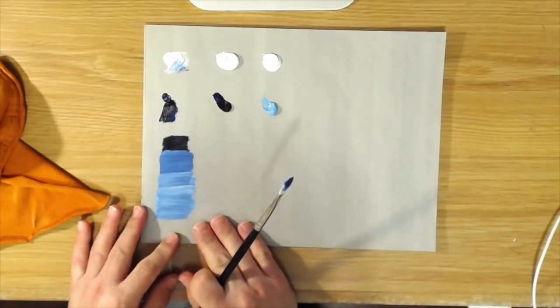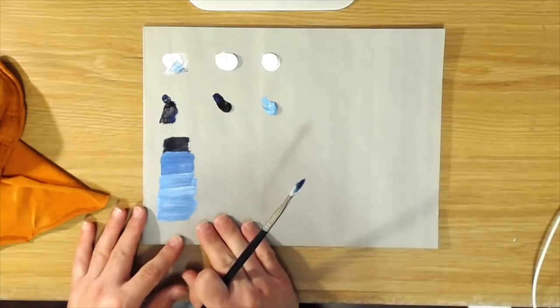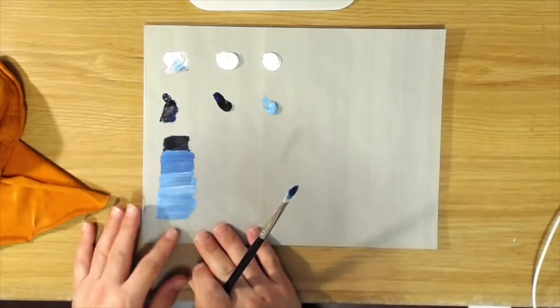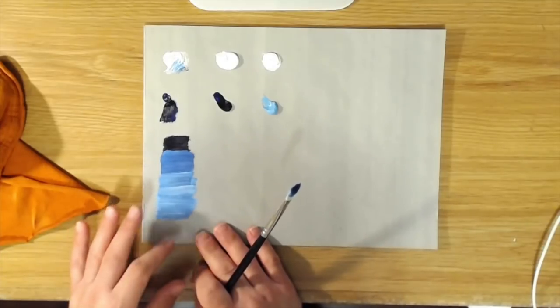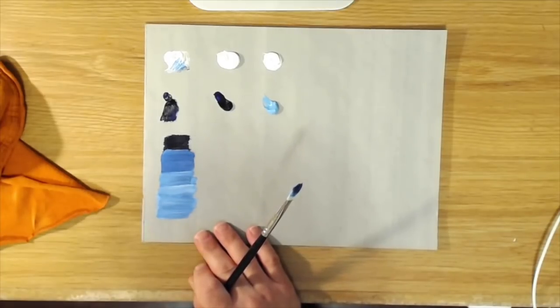And it was also the blue that Picasso used when he was doing all his work in his blue period. That's all Prussian blue. So it has that kind of unique hue to it when you mix it with white and it is a very common blue that you will find.